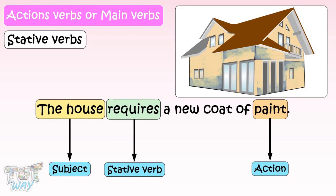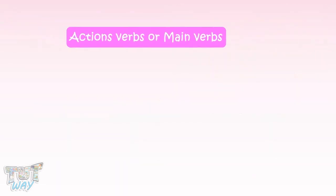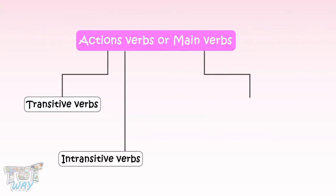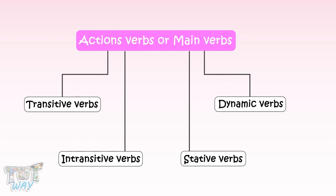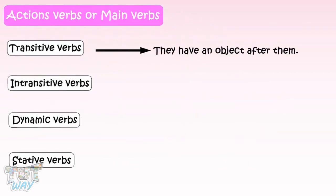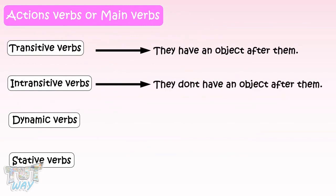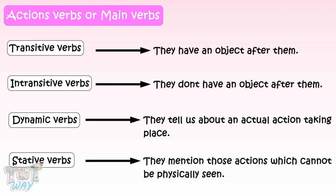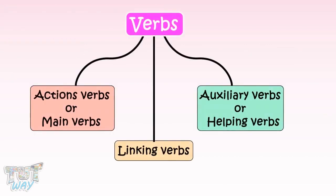So, we learned that action verbs or main verbs are divided into four categories: transitive, intransitive, dynamic, and stative. Transitive verbs have an object after them. Intransitive verbs do not have an object after them. Dynamic verbs tell us about an actual action taking place. And stative verbs mention those actions which cannot be physically seen. Now we have learnt about main verbs or action verbs.